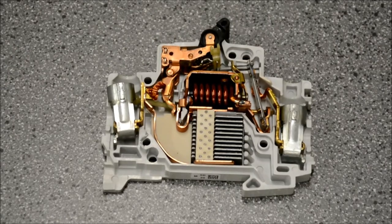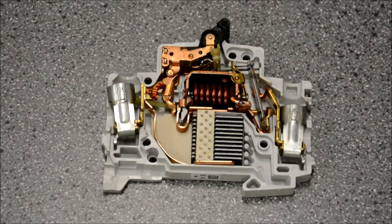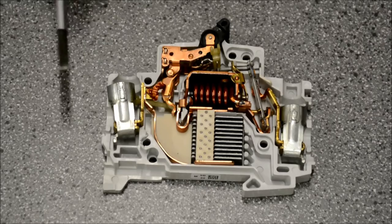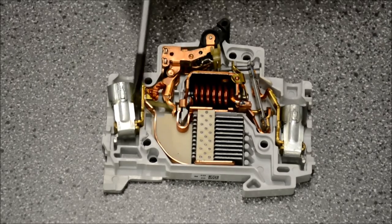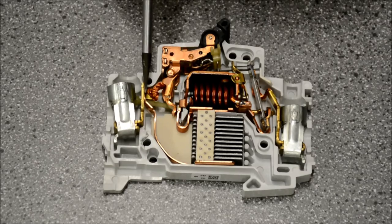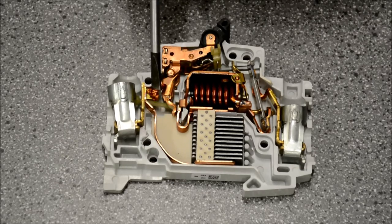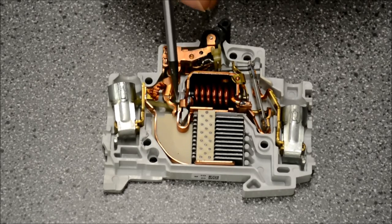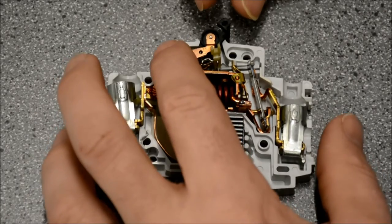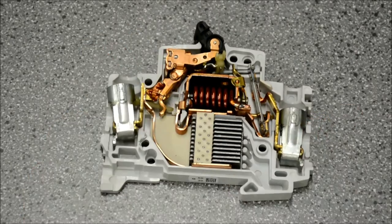We're going to follow the current path through this circuit breaker, first by looking at the input screw, which is this guy right here where we would attach a wire. The current would be carried up through this metal conductor and through this flexible braid. Right now the breaker is in a closed setting, so we're going to go ahead and hold it and open the breaker up.